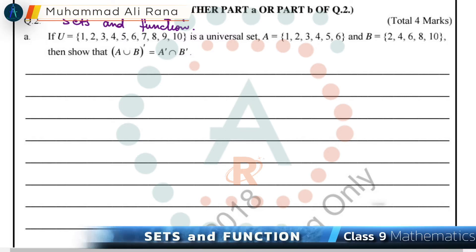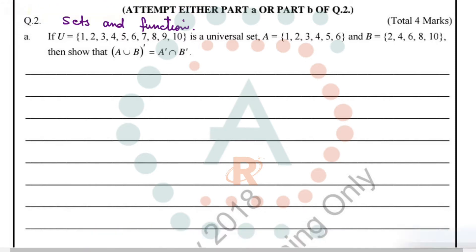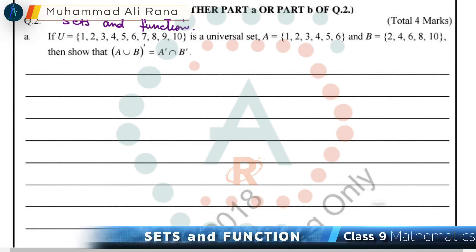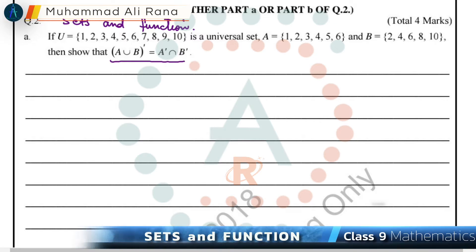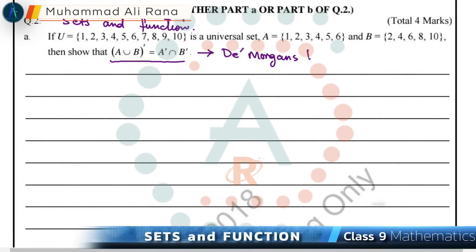Let's first solve Part A. In Part A we have a universal set from 1 to 10, and two sets A and B, where A is {1, 2, 3, 4, 5, 6} and B is {2, 4, 6, 8, 10}. We have to prove that (A∪B)' = A' ∩ B', which is actually De Morgan's Law, and we need to verify it.